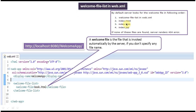If welcome-file-list is not present in web.xml, then the server checks for index.html. If index.html is there it will display it as the welcome page. If not, it will look for index.htm. If index.htm is present it will use it. If not, it will look for index.jsp. If index.jsp is there it will use index.jsp as the welcome page. If that is also not there, it will display a 404 error meaning files are not found.